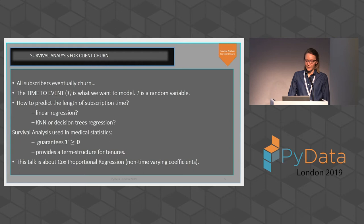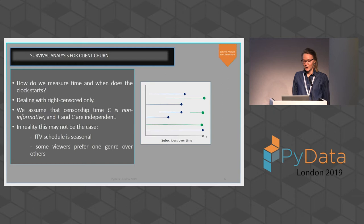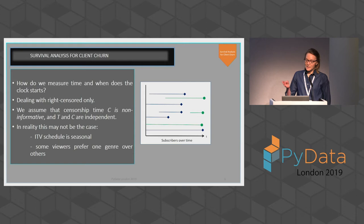This talk will cover only the Cox proportional regression model with non-time-varying coefficients. The clock starts when the ITV Hub Plus subscriber subscribes and stops when they churn. We have subscribers who are still with us, and also subscribers who churn and re-subscribe. The green points correspond to right-censored observations. If subscribers are still with us, these are censored points, and the distribution of T at censorship is assumed to be independent from T at churn. However, it's not always the case because ITV's schedule is seasonal, and these two may not necessarily be independent.